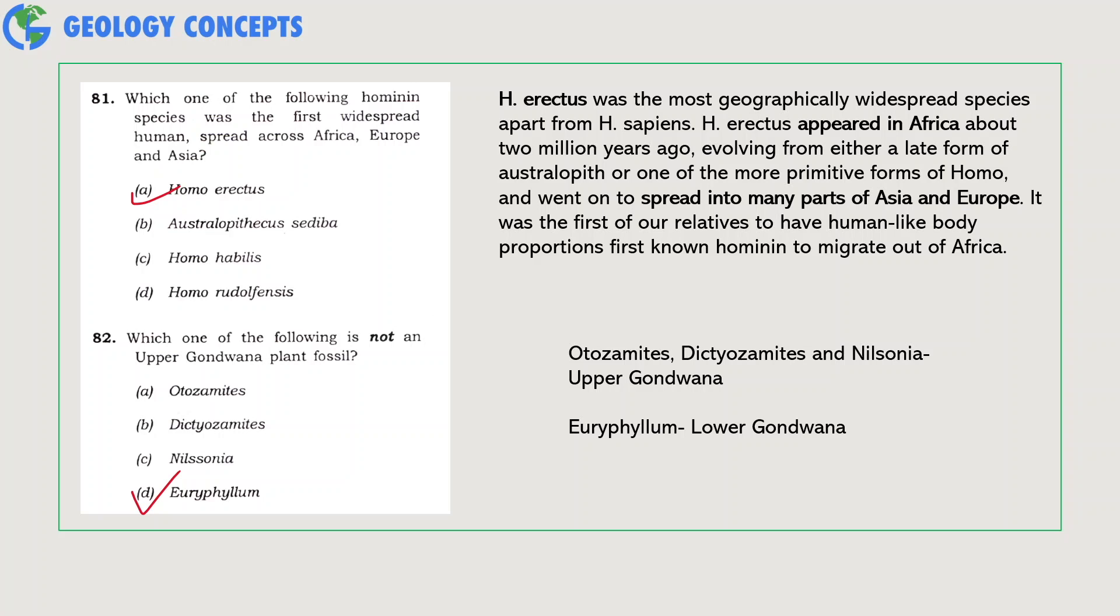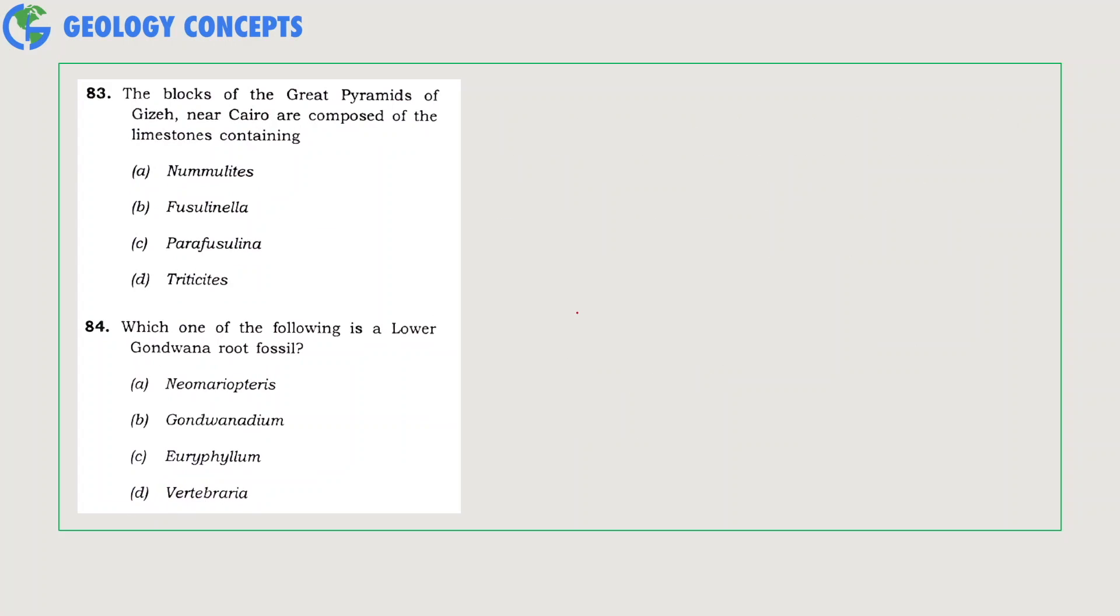Which one of the following is not an Upper Gondwana plant fossil? Ptilophyllum, Dictyozamites, and Nilsonia are from Upper Gondwana, but Euryphyllum is from Lower Gondwana. So Euryphyllum, option D, is the right answer.